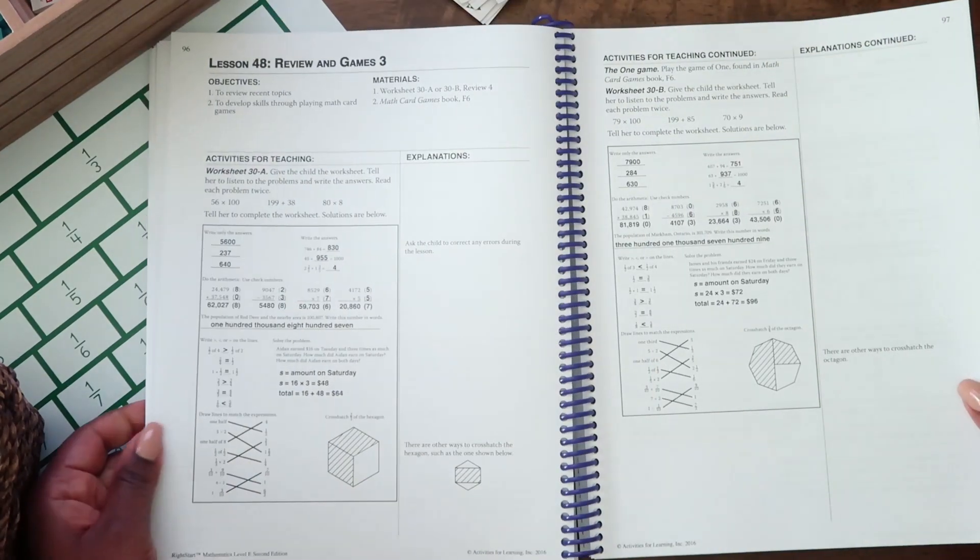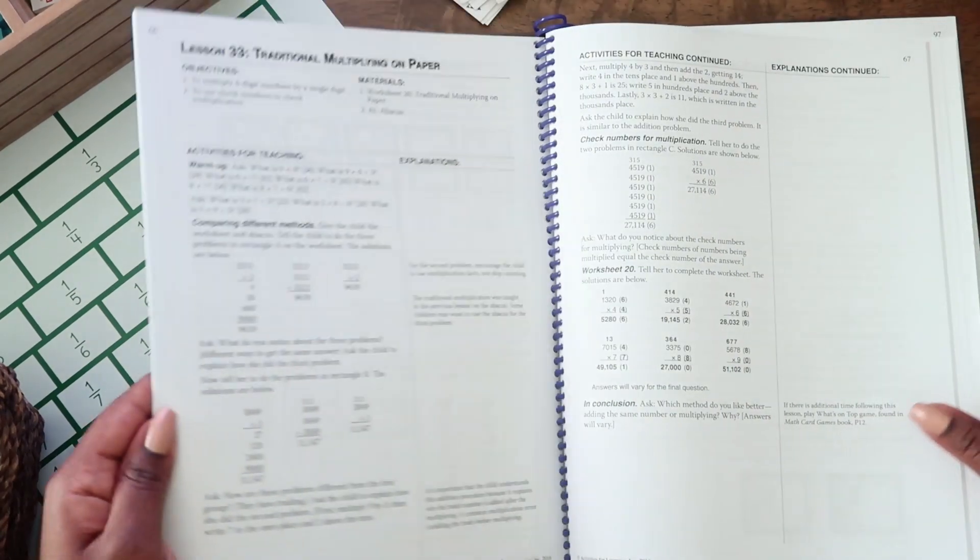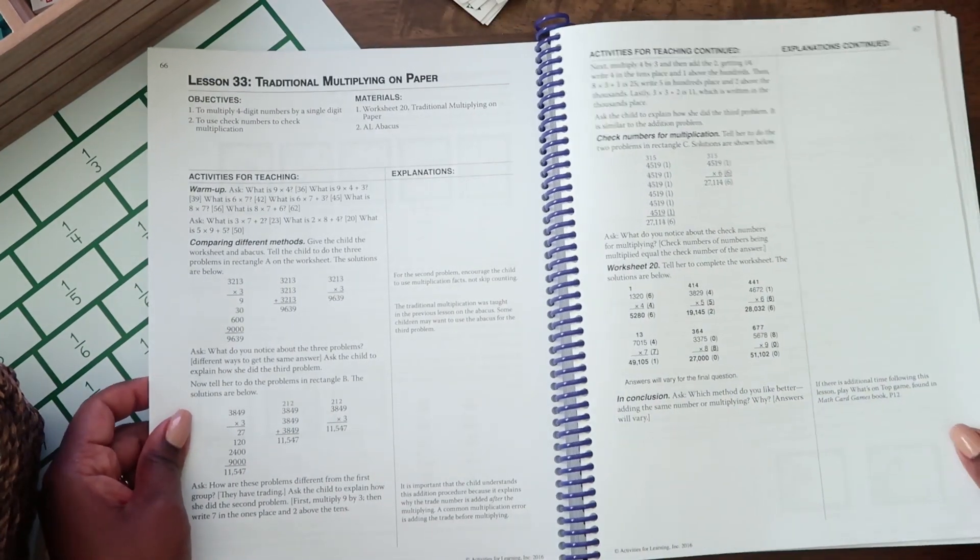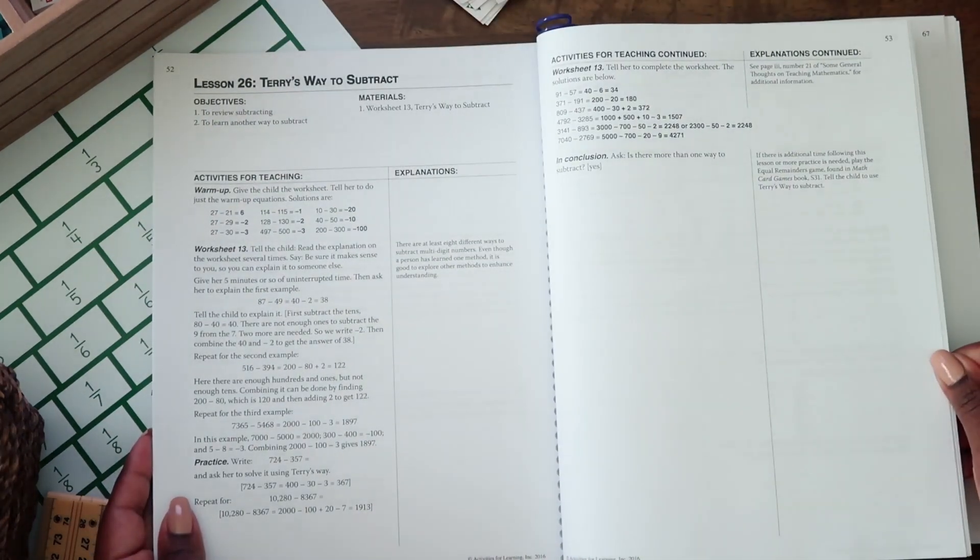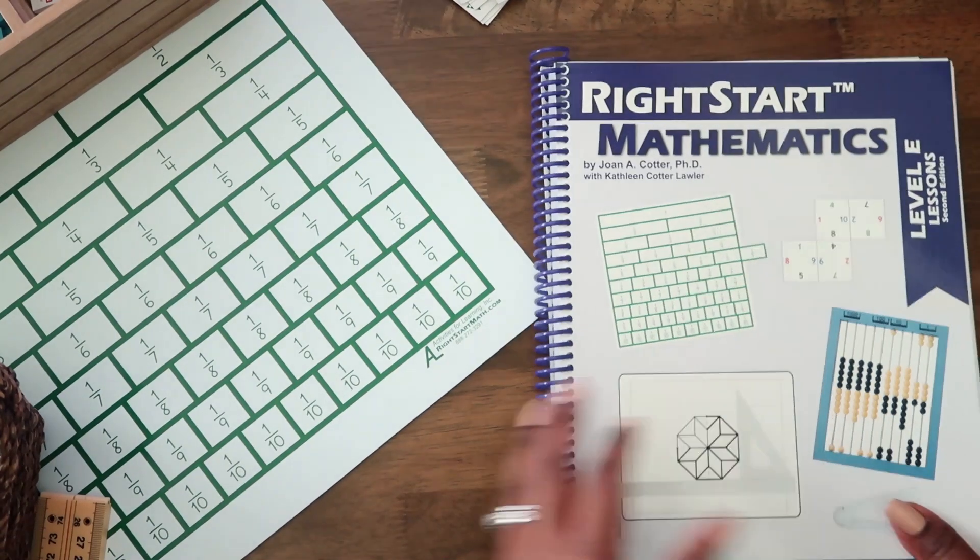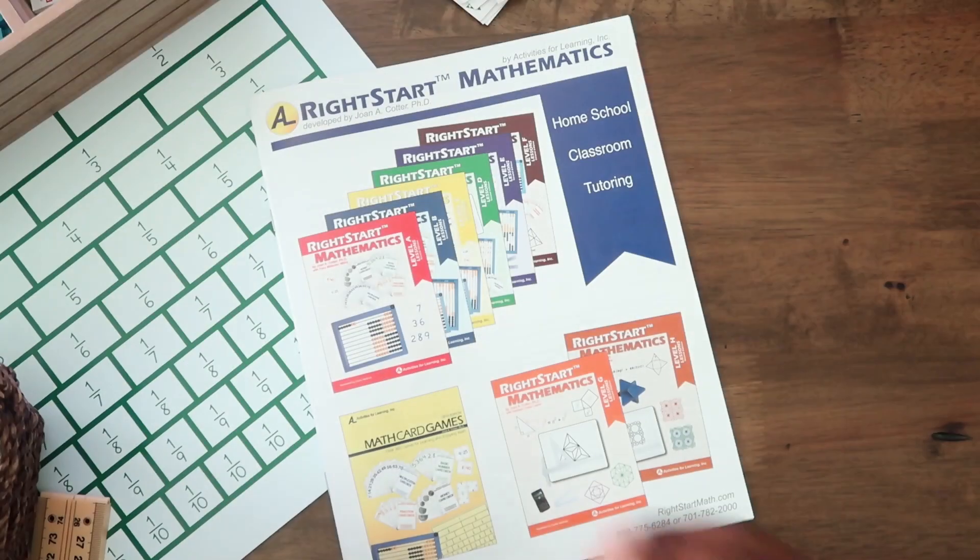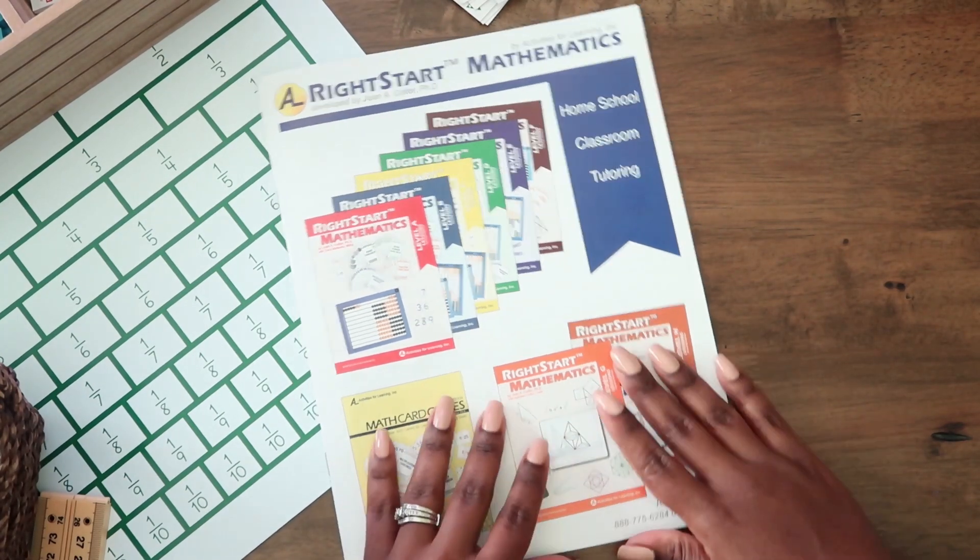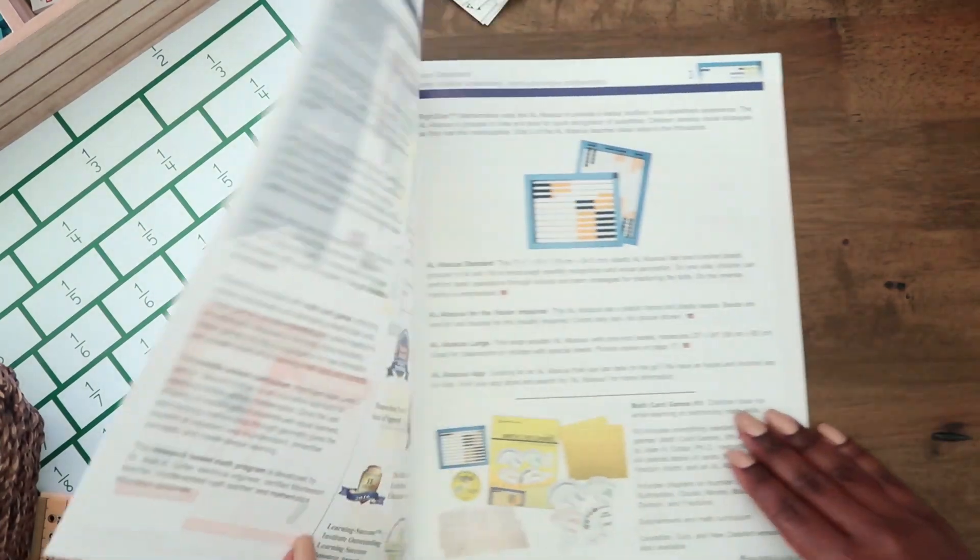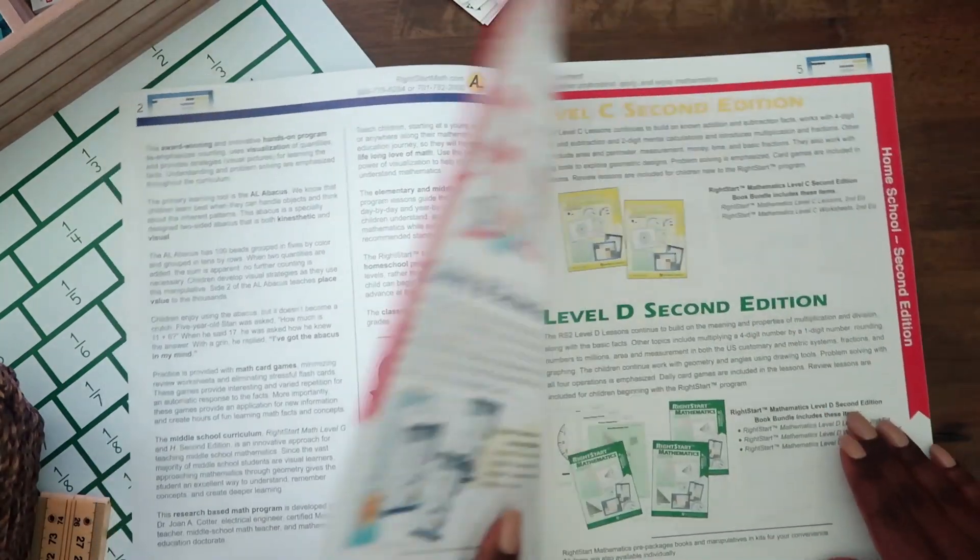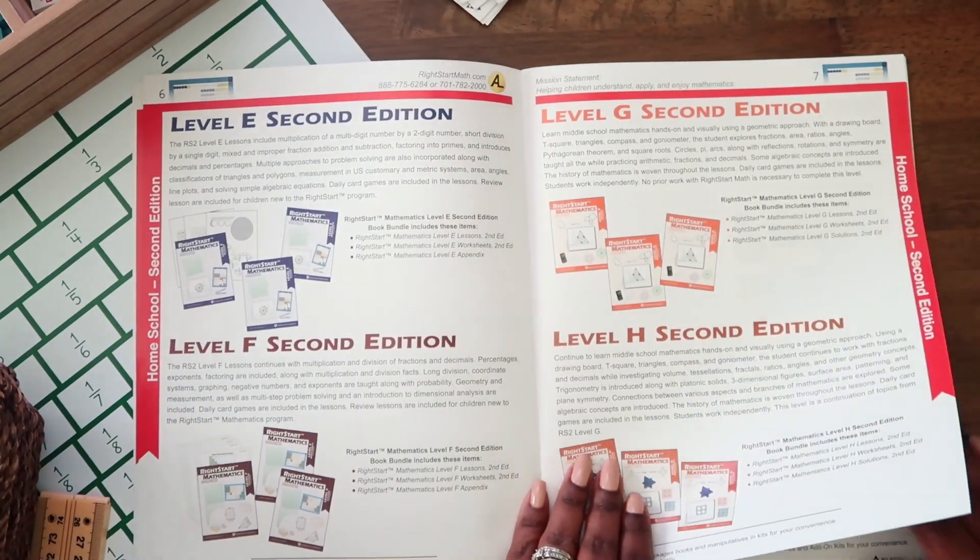And you can go online and look more at and read more about the program and look at all the different resources they have to offer. I'll give you a quick flip of the book that comes in the mail, their magazine in the book where they share their different materials. So I'll quickly flip through this. You see it says homeschool classroom and tutoring. And they have the different levels here. I believe this goes to middle school.